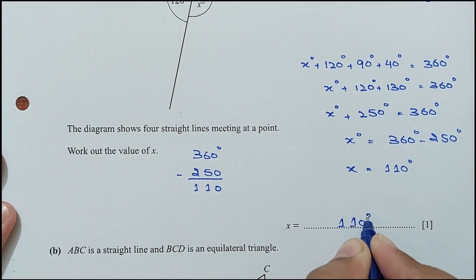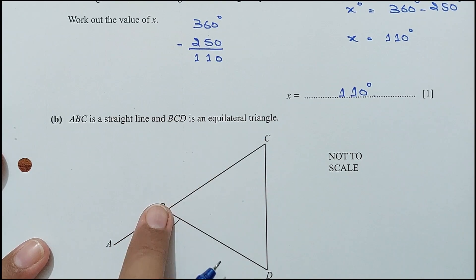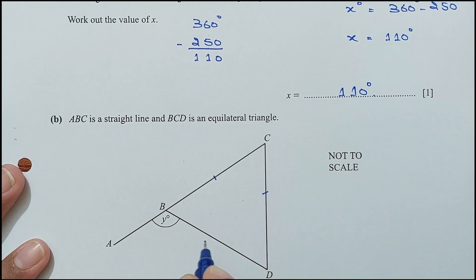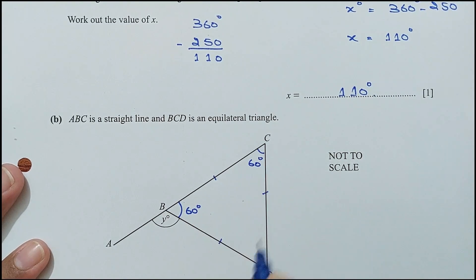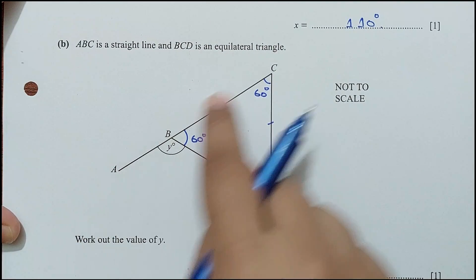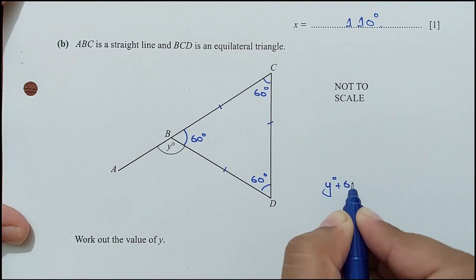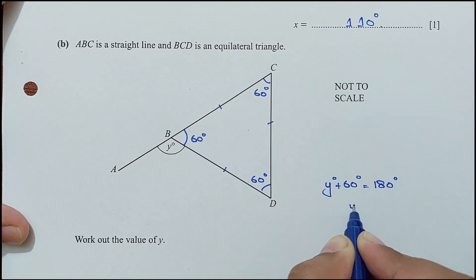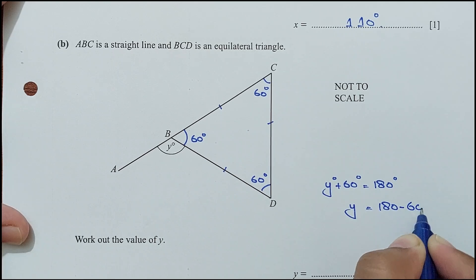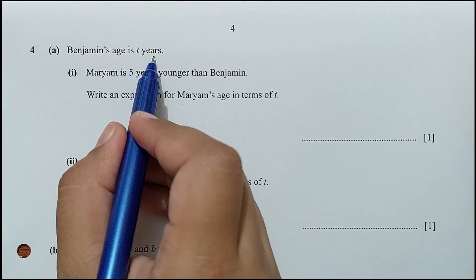Part B: ABC is a straight line and BCD is an equilateral triangle, so all angles are 60 degrees. Work out the value of y. Since ABC is a straight line, angles on a straight line sum to 180 degrees. So y + 60 = 180, therefore y = 120 degrees.